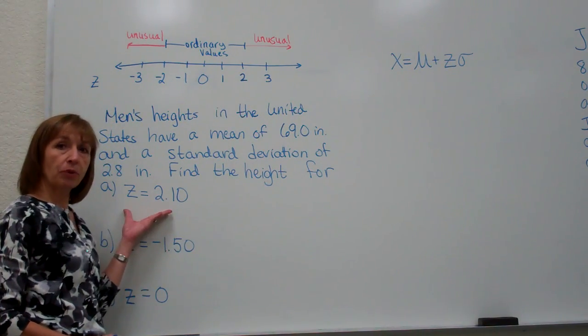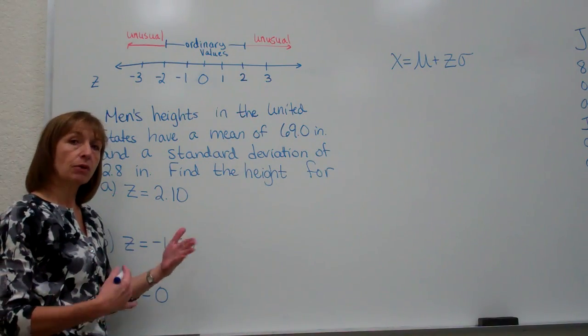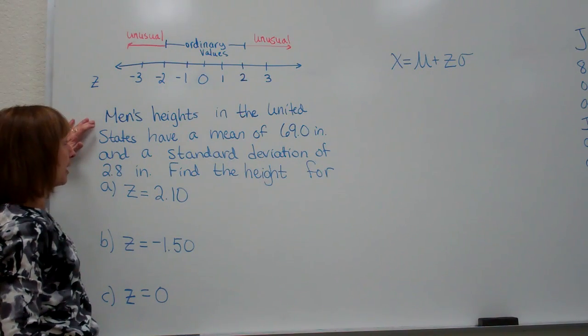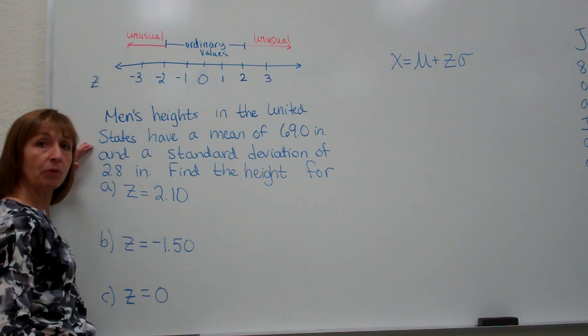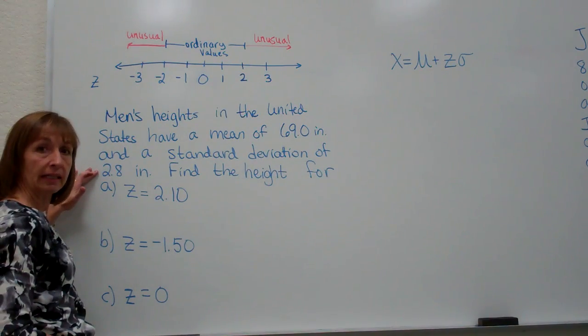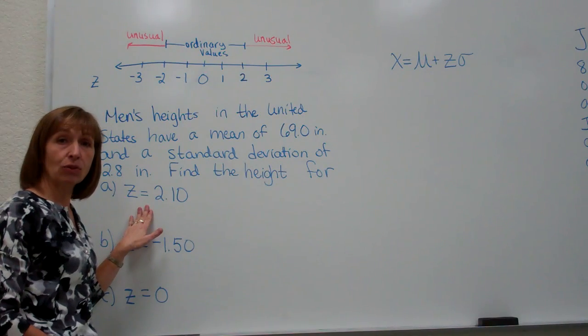We'll also want to practice going from our z-scores back to our raw scores so we can make the conversions both ways. Now in this example I have men's heights in the United States have a mean of 69.0 inches and a standard deviation of 2.8 inches and I want to find the height for particular z-scores that are given to me.